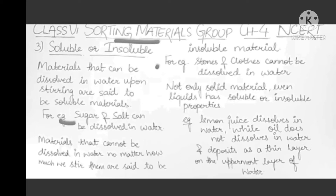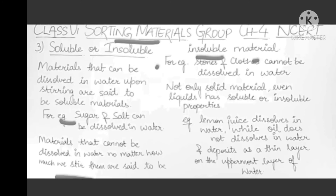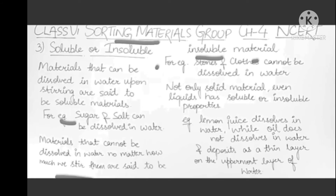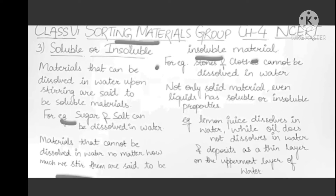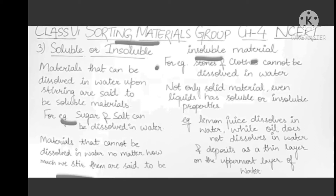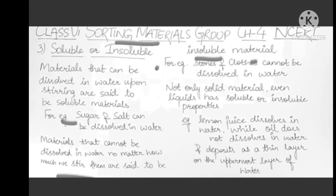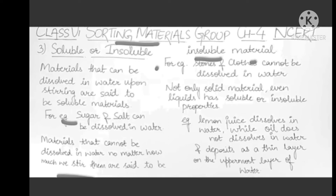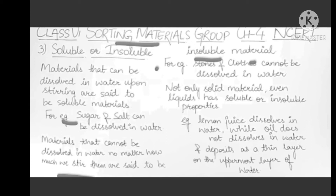Materials that cannot be dissolved in water, no matter how much we stir them, are said to be insoluble materials. Many materials, no matter how much we stir or shake them, will not dissolve in water — those are called insoluble materials. For example, stone and clothes cannot be dissolved in water. No matter how much we try, stone and clothes will not dissolve, so they are insoluble materials.